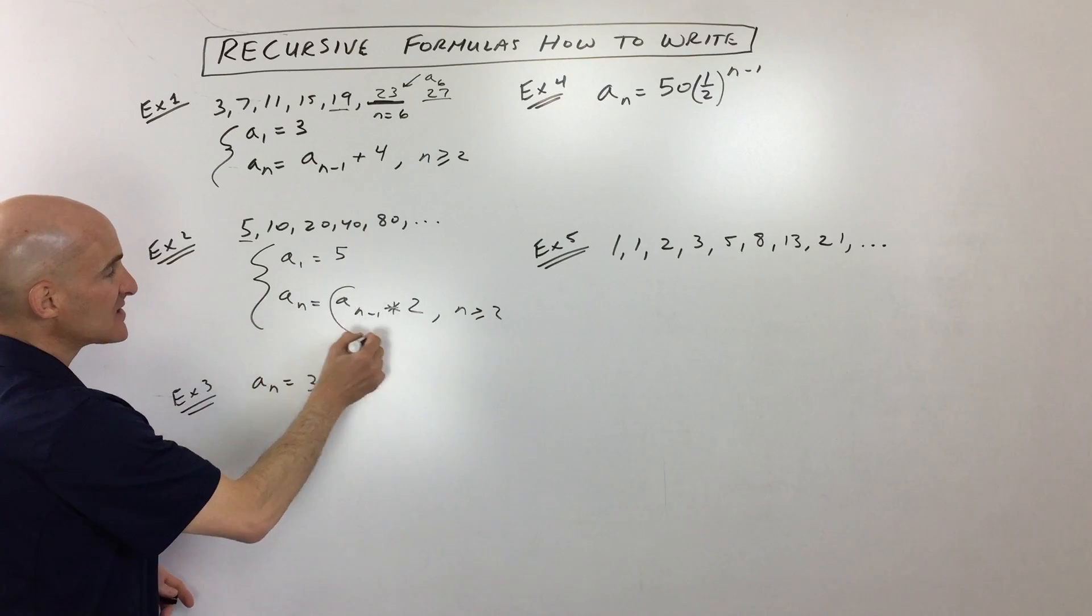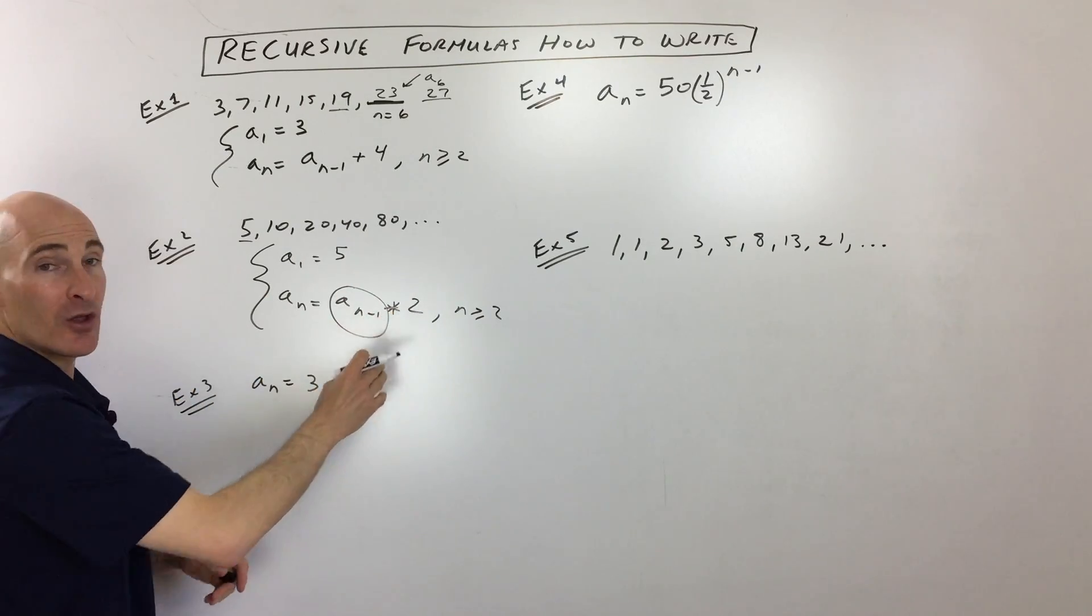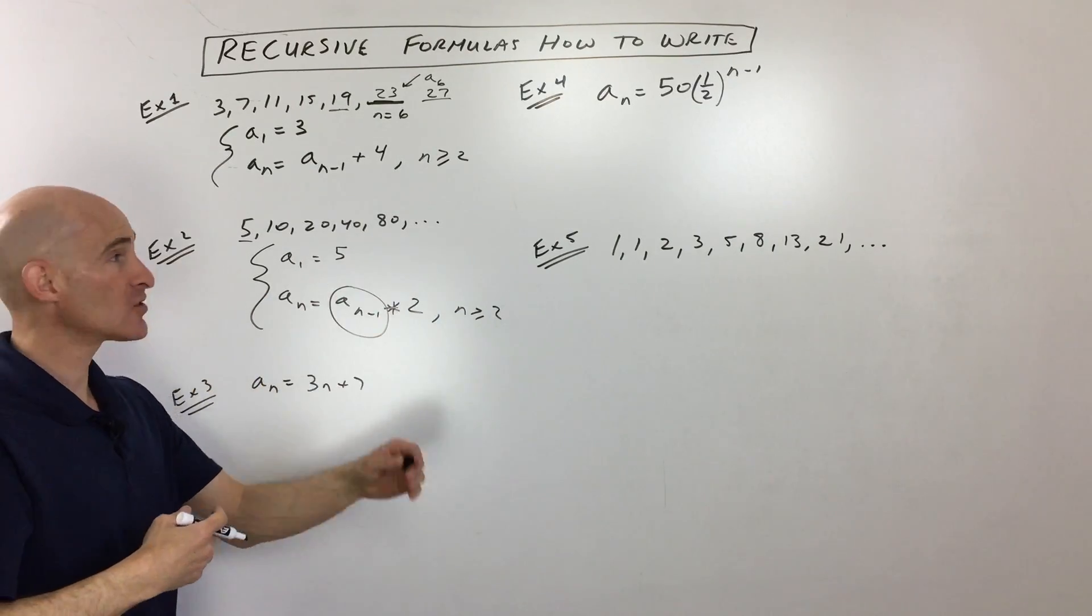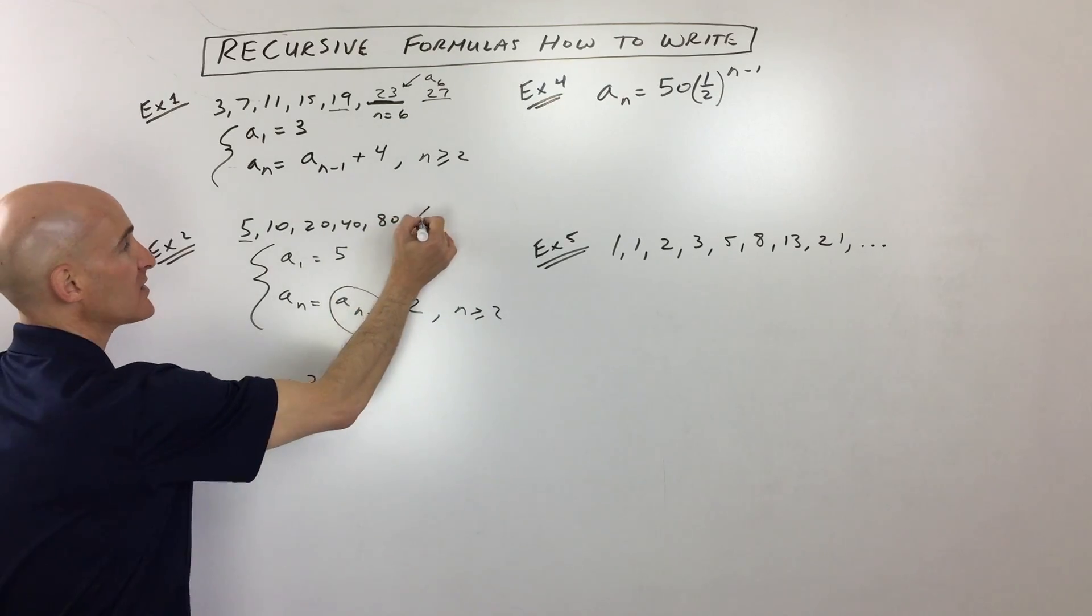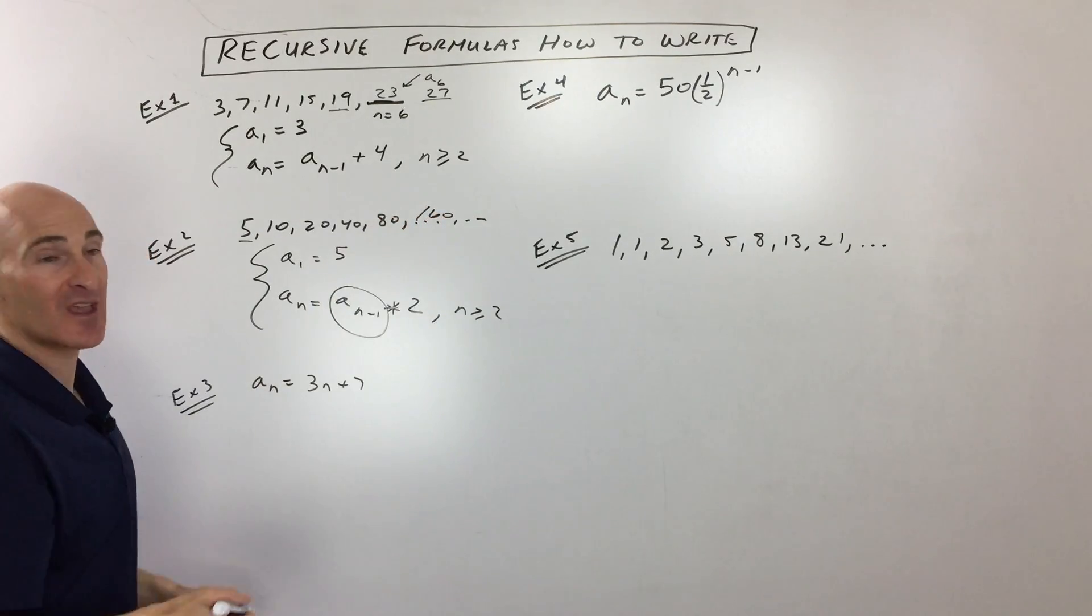So that's the idea. You just take the previous term, that's what this a sub n minus 1 represents, and then you tell the person, how do you get to the next term? Oh, you just multiply by 2. Okay, so 160 and so on.